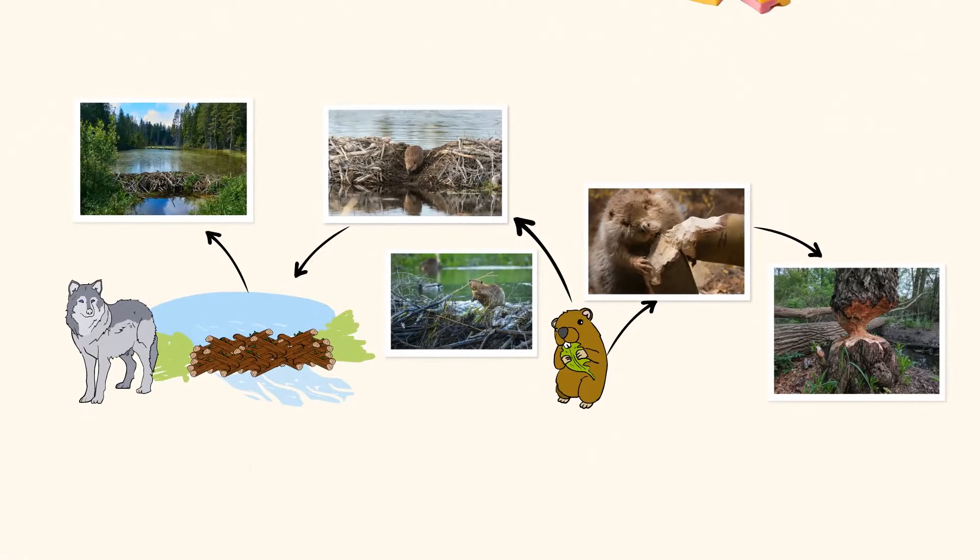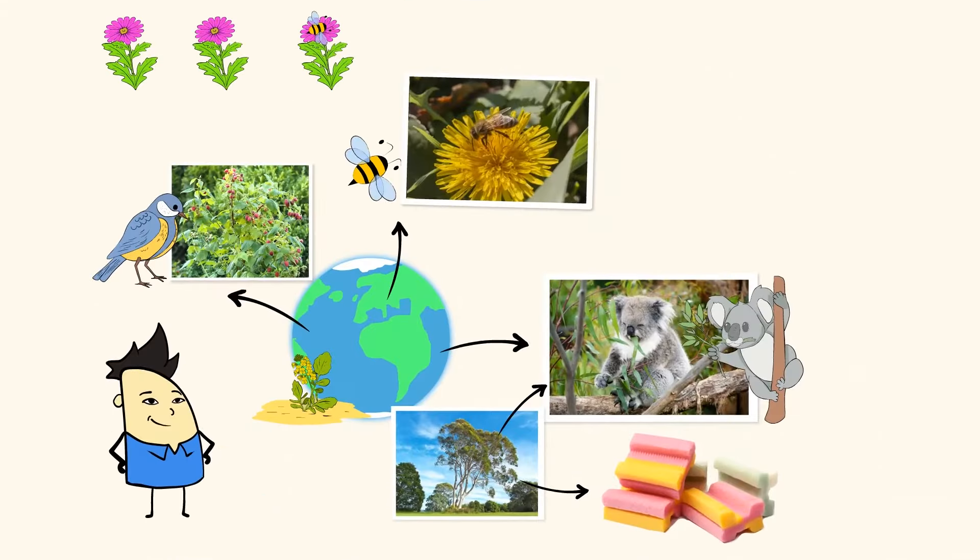That clean air is thanks to the changes that our friends the trees make. Animals like beavers make big changes to their environment by cutting down trees and building dams. Hungry koalas, squirrels, and bees make changes when they gather food.